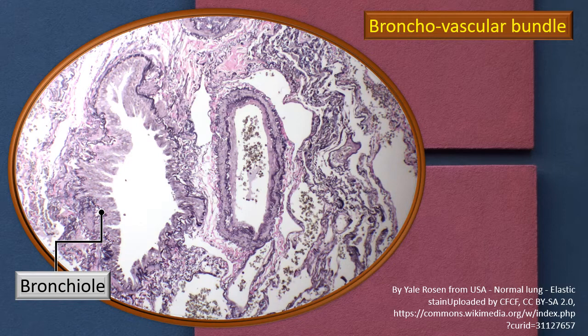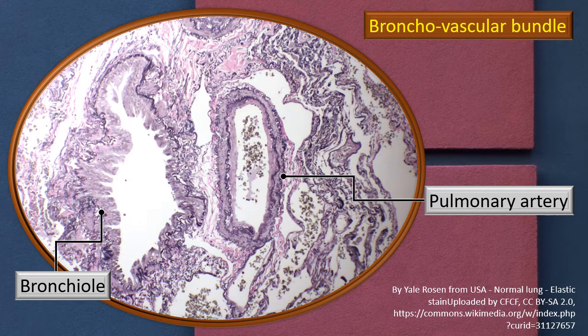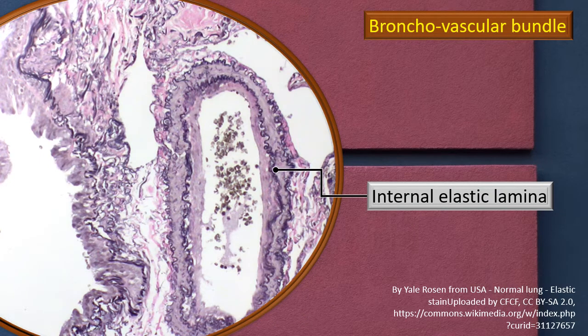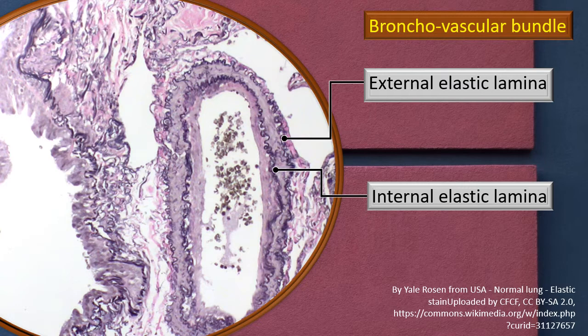This is a very interesting slide — obviously not a hematoxylin and eosin stain; it is a stain where the elastic tissue has been particularly highlighted. We can easily identify the bronchiole, and just next to it is one of the larger branches of the pulmonary artery. Unusually, you can see not only the internal elastic lamina but also, beautifully, the external elastic lamina — a very important signature feature of the pulmonary artery and its bigger branches.